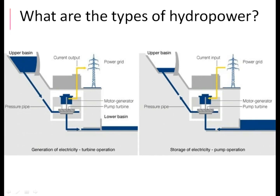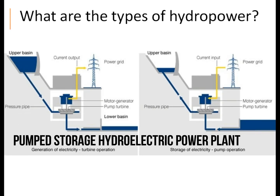3. Pump-storage hydropower. At pump-storage hydroelectric stations, water is pumped back into the reservoir when there are periods of low power demand. And during periods of high electrical demand, the stored water is released through turbines to produce electric power.